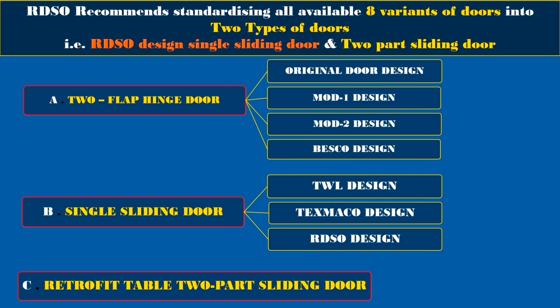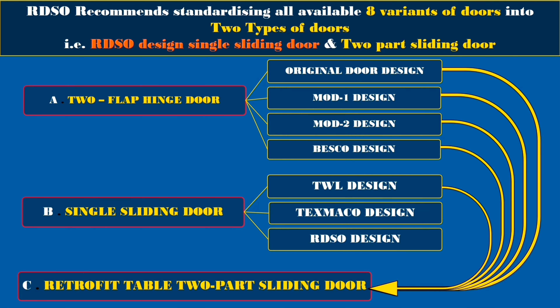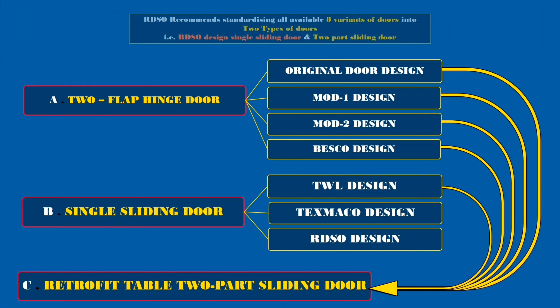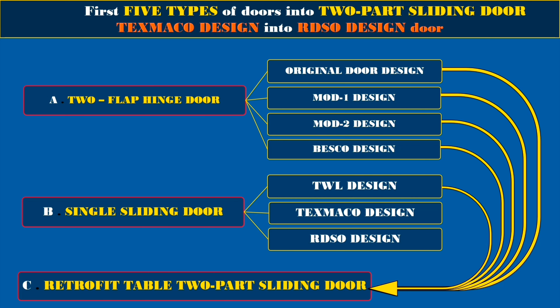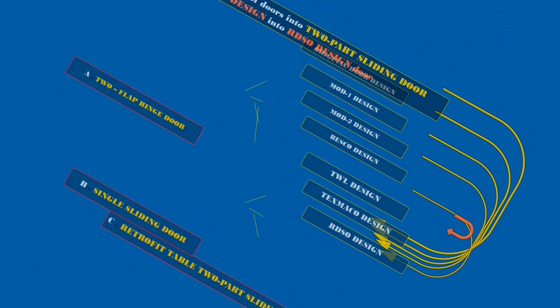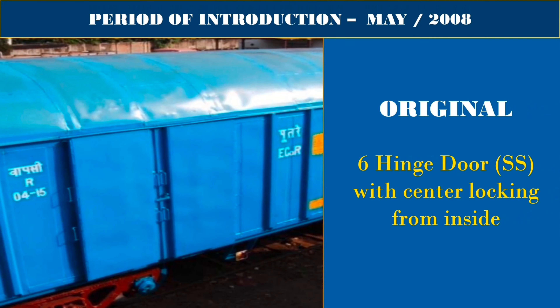RDSO recommends standardizing all available 8 variants of doors into 2 types: RDSO Design Single Sliding Door and 2 Part Sliding Door. The first 5 types of doors are to be converted into 2 Part Sliding Door, and the TexMacho Design is to be converted into RDSO Design Door.